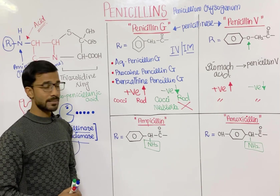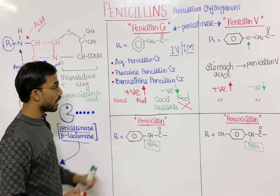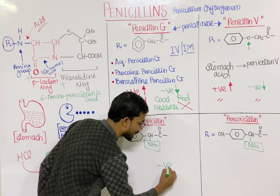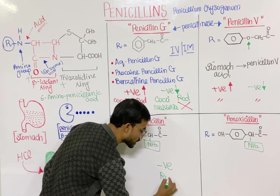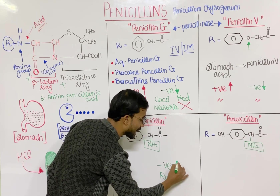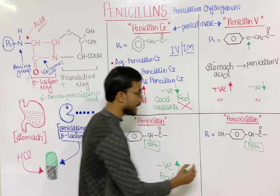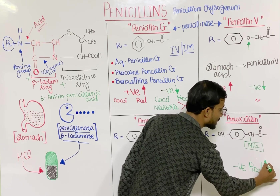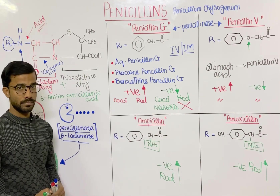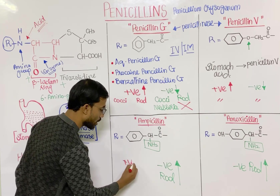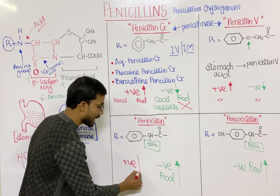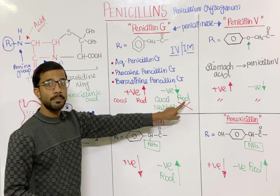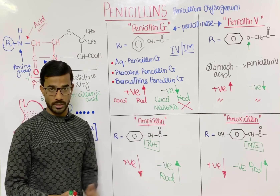What bacteria are susceptible to ampicillin and amoxicillin? The rule is just opposite — gram-negative bacteria, specifically gram-negative rods, will be susceptible to ampicillin and amoxicillin. On the other hand, gram-positive bacteria will be less susceptible to these drugs. These drugs target gram-negative bacteria, while the natural penicillins target gram-positive bacteria.